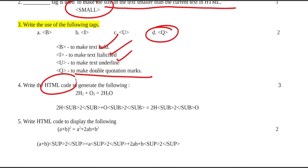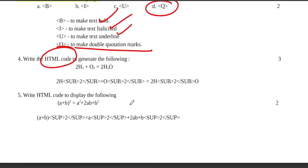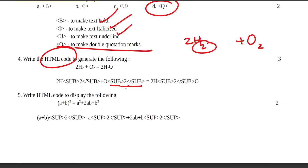HTML code tag: 2H2 + O2 = 2H2 is called code. 2H is normal, but if you have 2H2, you have subscript. Use sub open and sub close for the subscript. Then plus O2 uses subscript: sub open 2 sub close.